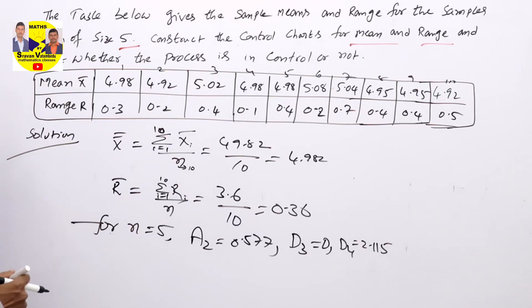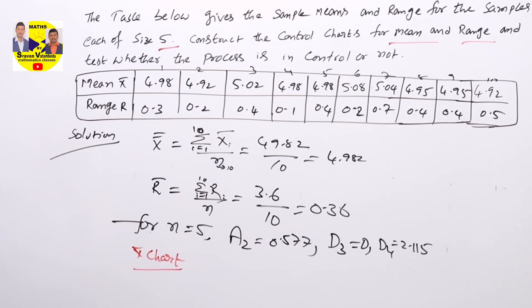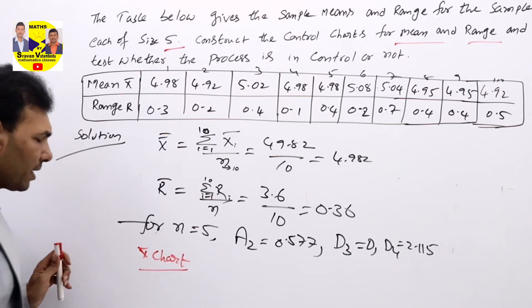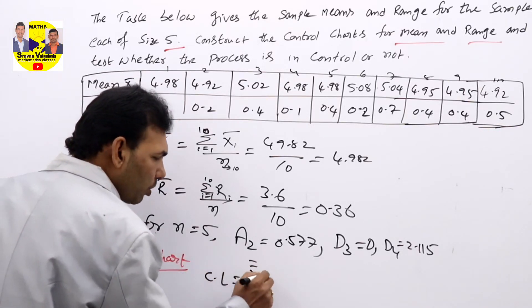Now, coming to our first chart: X bar chart, that is mean chart. Coming to the mean chart, what you will get—CL is X double bar, that is 4.982.